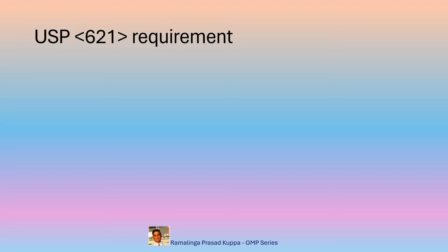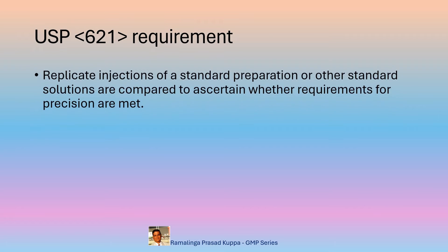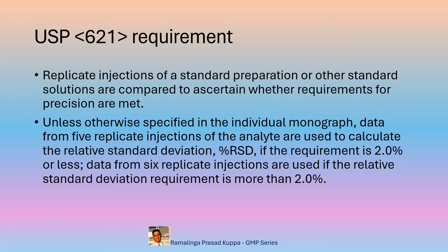Let us see the USP Chapter 621 requirement. Replicate injections of standard preparation or other standard solutions are compared to ascertain whether requirements for precision are met. USP Chapter 621 prescribes that the precision of the replicate injections should be established. Unless otherwise specified in the individual monograph,